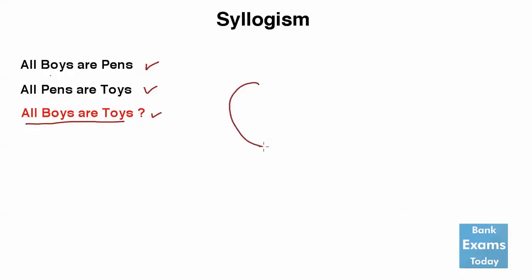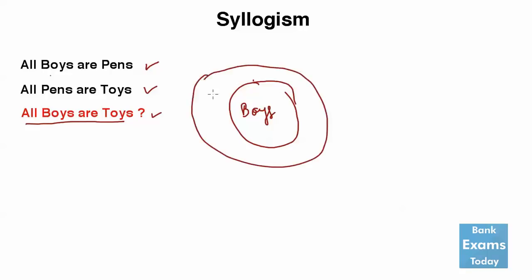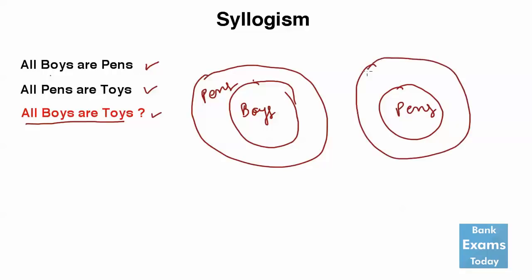First, we draw the circle. All the boys are pens, meaning all the boys are part of the bigger circle that is pens. And all the pens are part of the even bigger circle, toys. So we can combine these two diagrams.